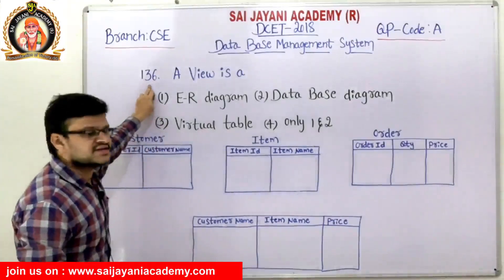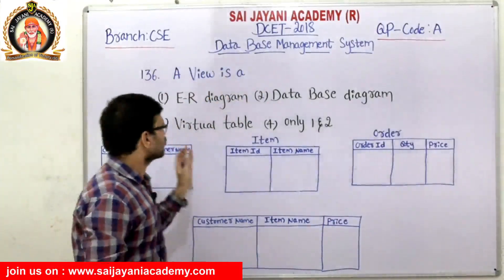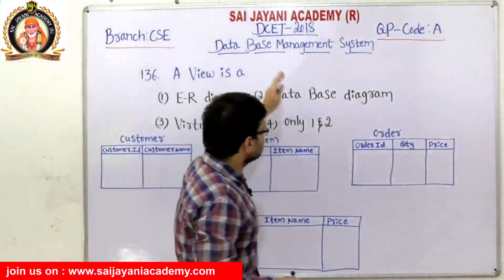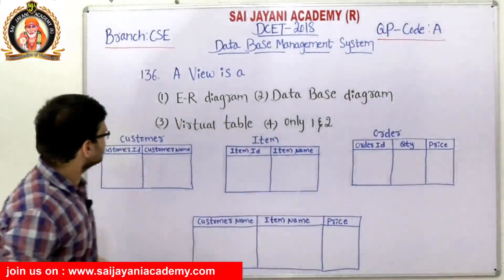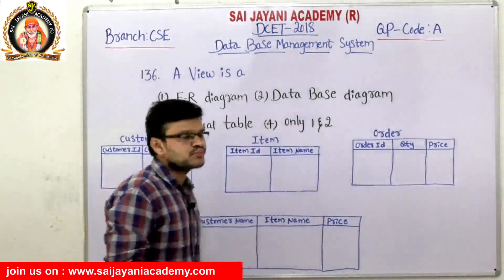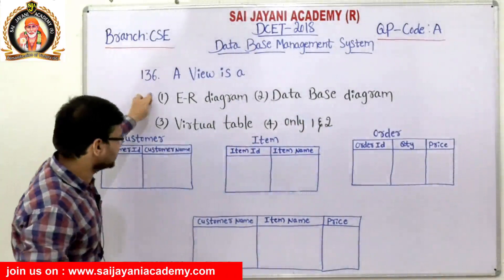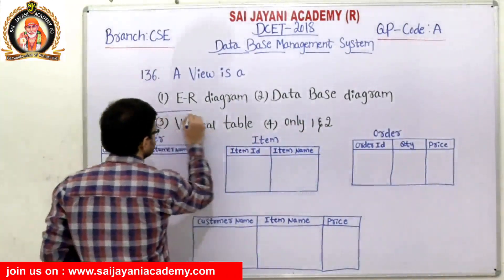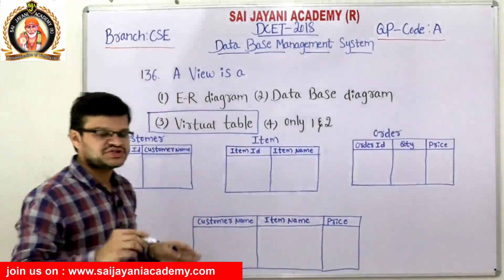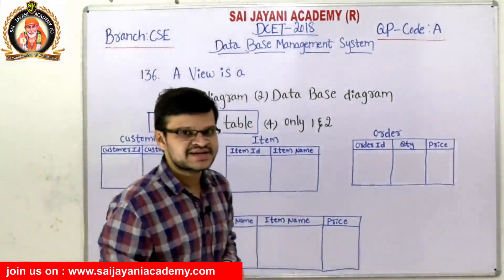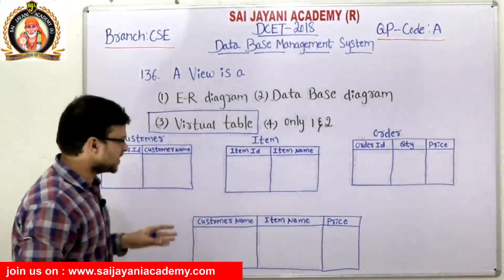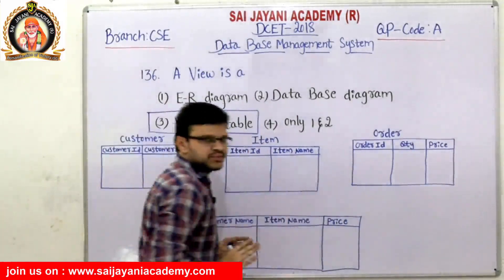Question number 136: A view is — with options: ER diagram, database diagram, a virtual table, and a fourth option. For question number 136, the third option, virtual table, is the right answer. A view is a virtual table, also called a subset of the table, and a view can be created by using one or more tables.